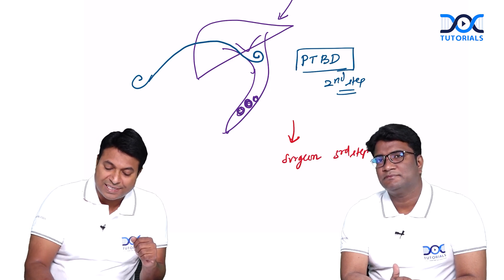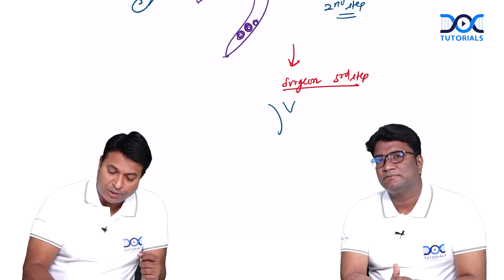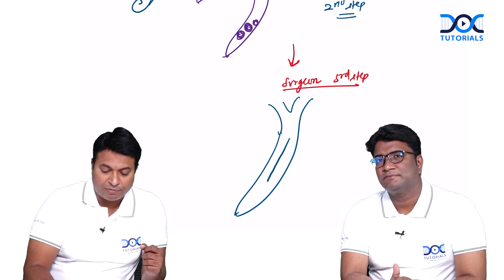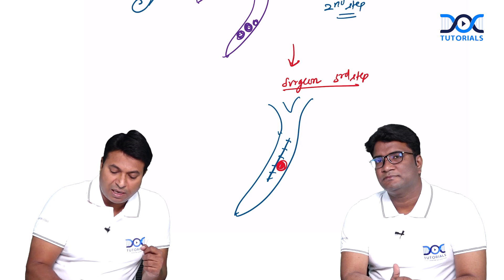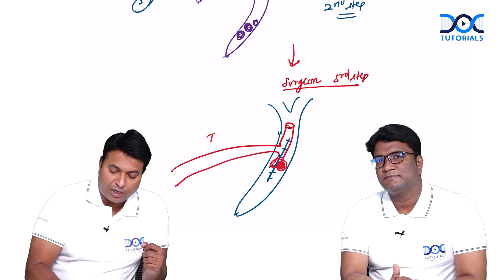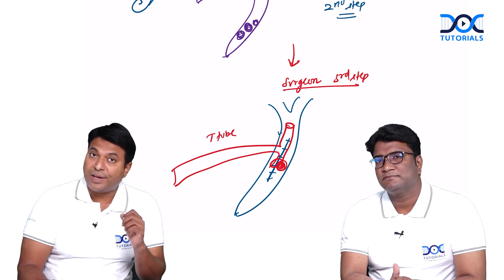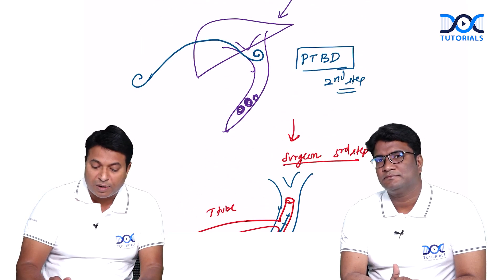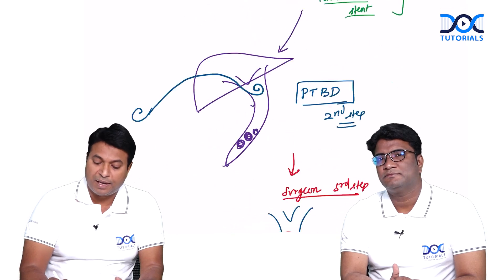If PTBD is also not possible, then we call the surgeon — that is the third step. As surgeons, we open the bile duct vertically, remove the stone, and keep a T-tube inside the bile duct to drain the bile. However, the risk and mortality of this surgery are very high, which is why we should prefer minimally invasive procedures like ERCP or PTBD for cholangitis cases.